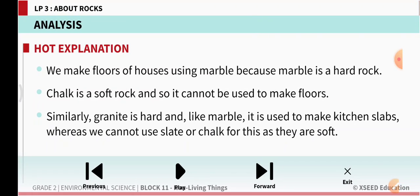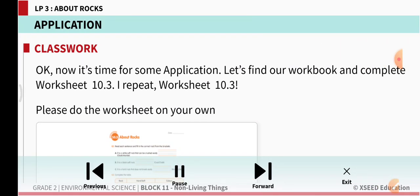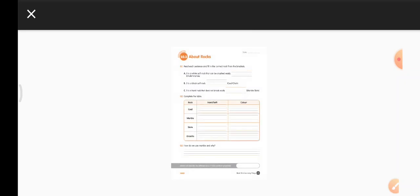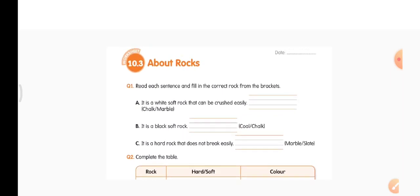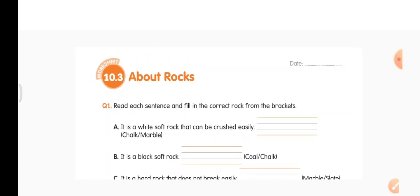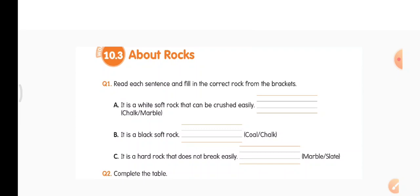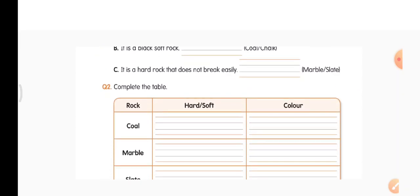Now it's time, all of you open your worksheet. This is page number 10.3, worksheet 10.3. All of you put the date. Question 1: Read each sentence and fill in the correct rock from the brackets. A. It is white, soft rock that can be crushed easily, is it chalk or marble? It is chalk, so write chalk there. B. It is black soft rock, is it coal or chalk? Coal is black in color, so coal is the answer. C. It is hard rock that does not break easily, marble or slate? Slate breaks easily, marble is very hard, so marble is the answer.